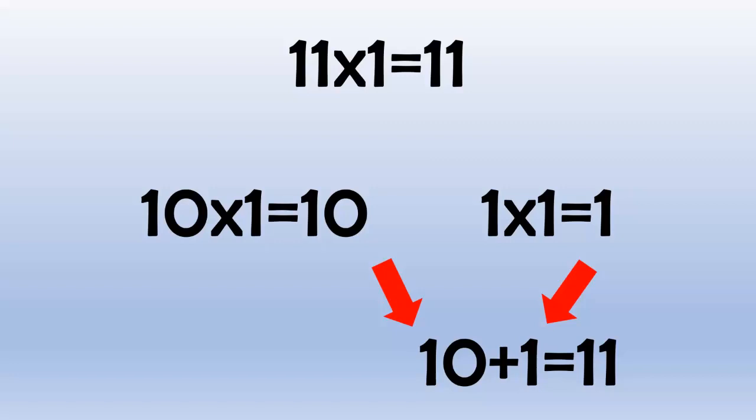11 times 6 equals 66, because 10 times 6 equals 60, and 1 times 6 equals 6, and 60 plus 6 equals 66.